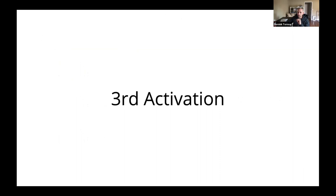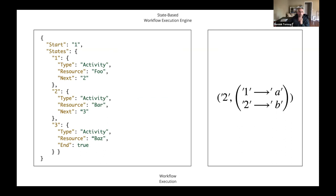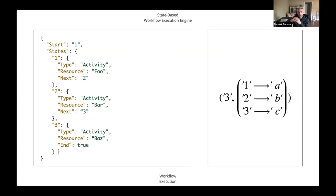For the third activation, our environment grows with a and b, and we have the current state being two. In the final activation, we persist state three and the entire environment. These are the state-based workflow execution engines — they are usually highly limited in their expressiveness because we need to persist the program counter and all of the environment in a flat scope, and the control flow expressible is limited by the DSL.